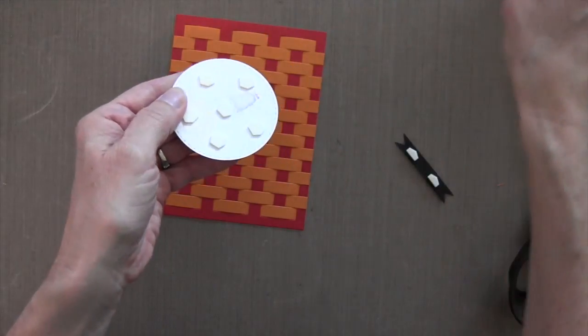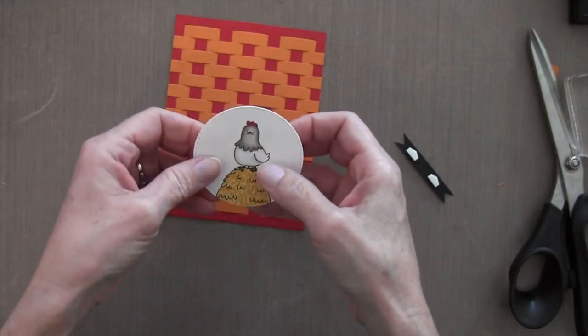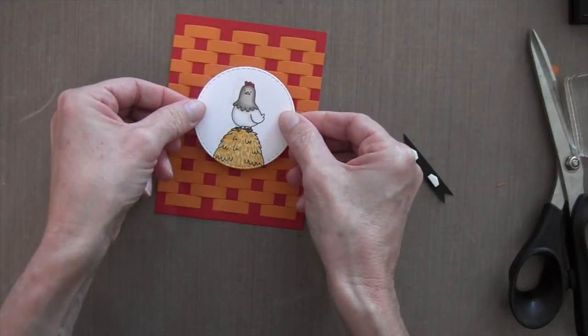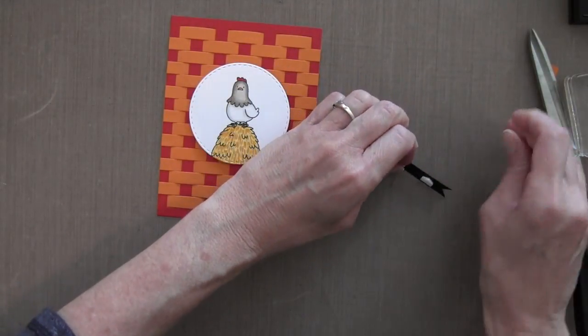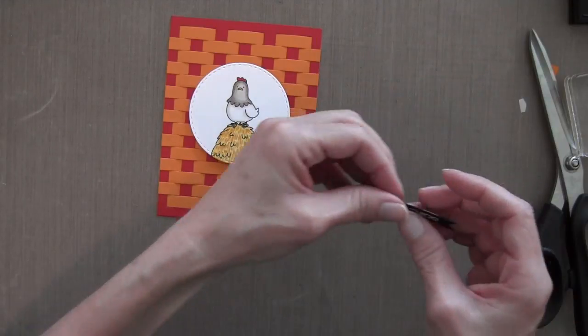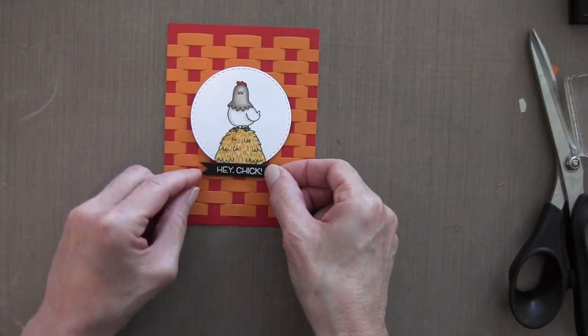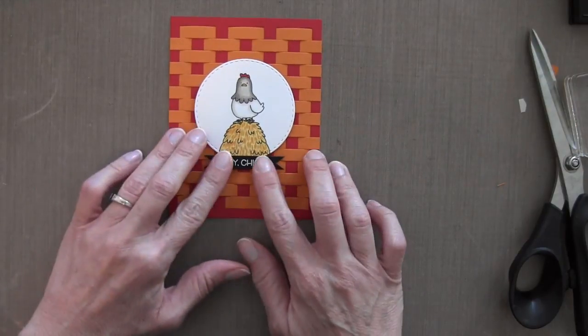Now it's time to put it together. So I just added a bunch of Stampin' Up Dimensionals or just foam adhesive circles. And I'm going to center it maybe a little bit higher than center on the basket weave. And then I cut these pieces, the dimensionals in half to put on my sentiment. And I'm just going to overlap just a little bit of that bottom edge of the circle.